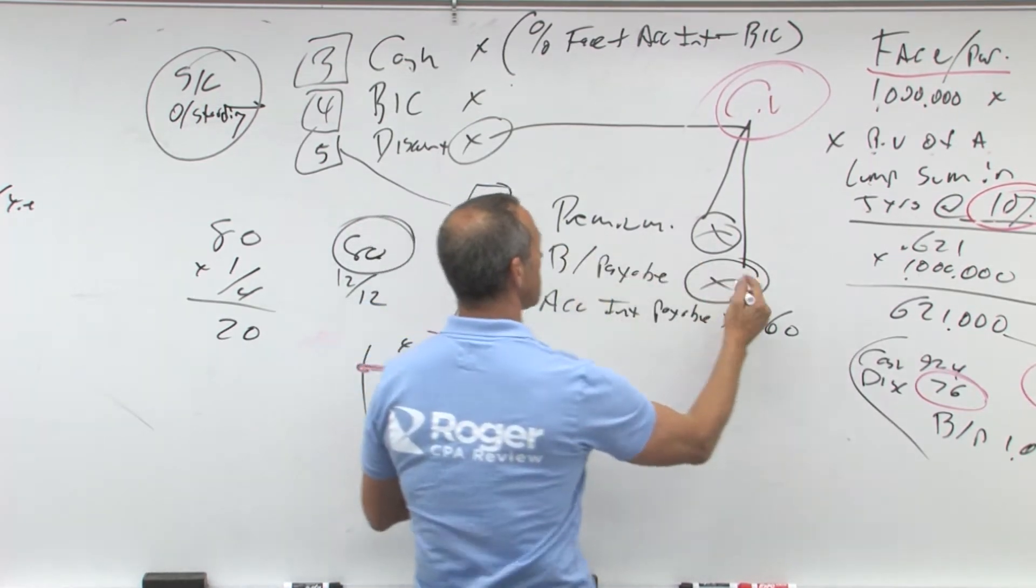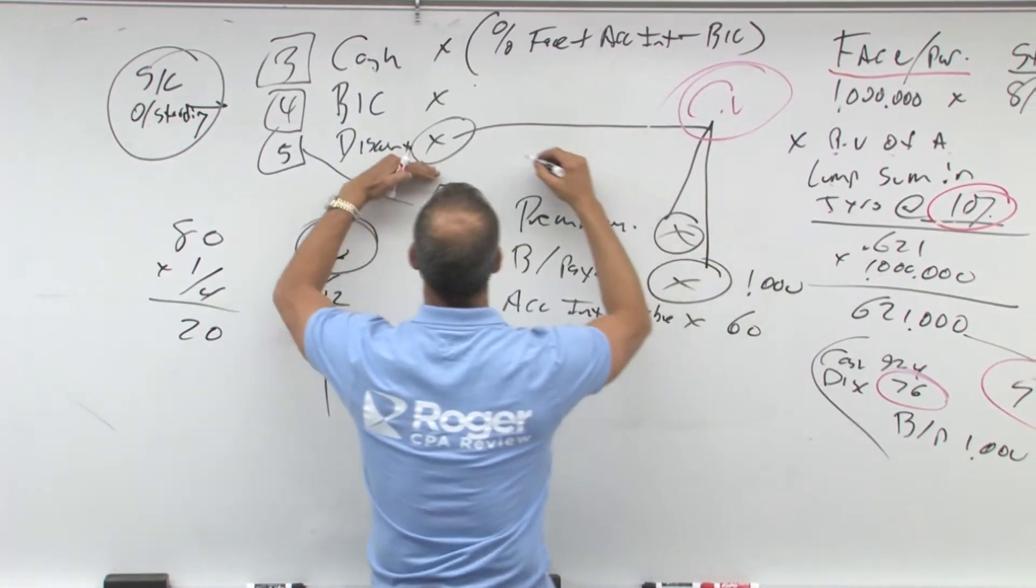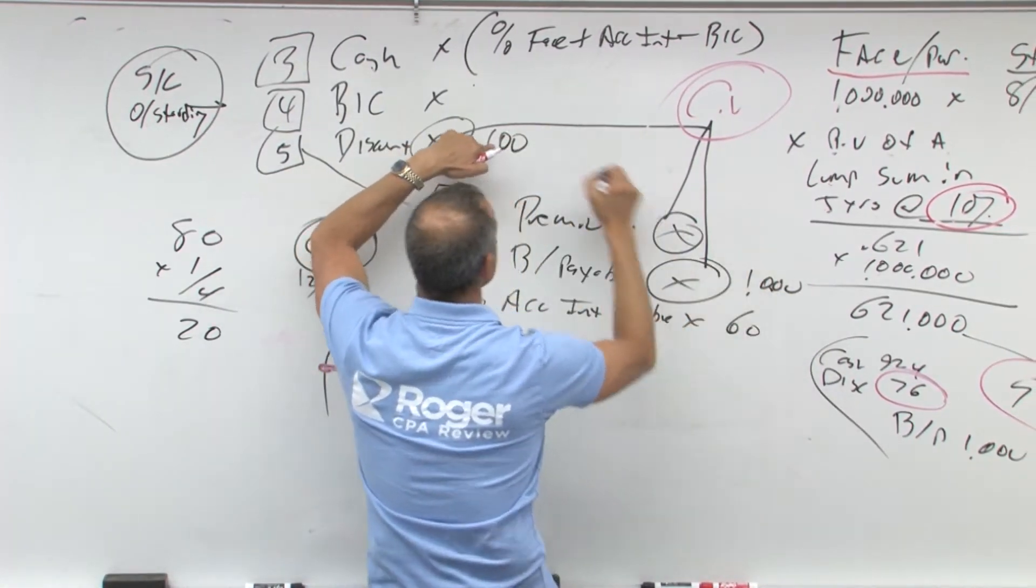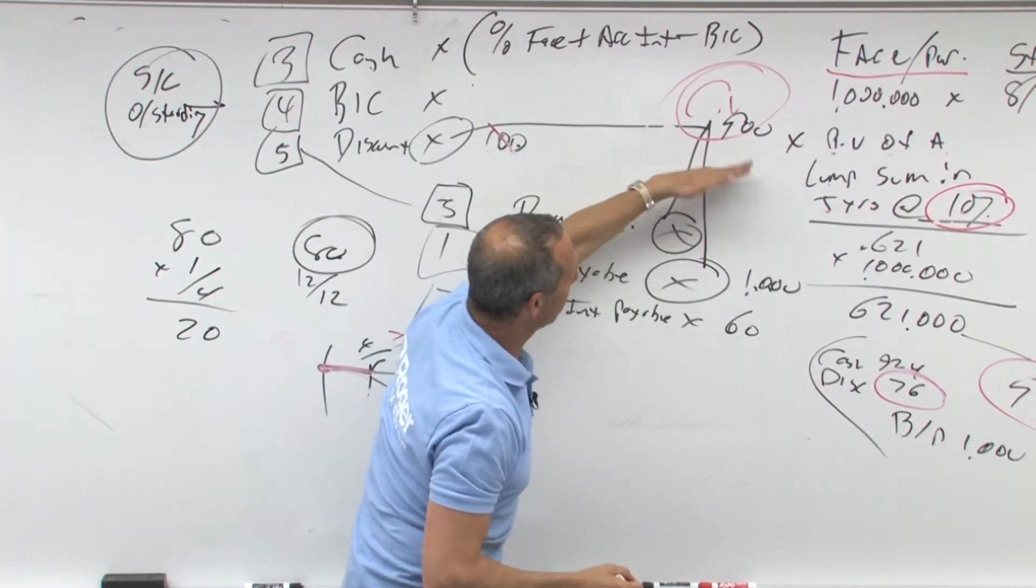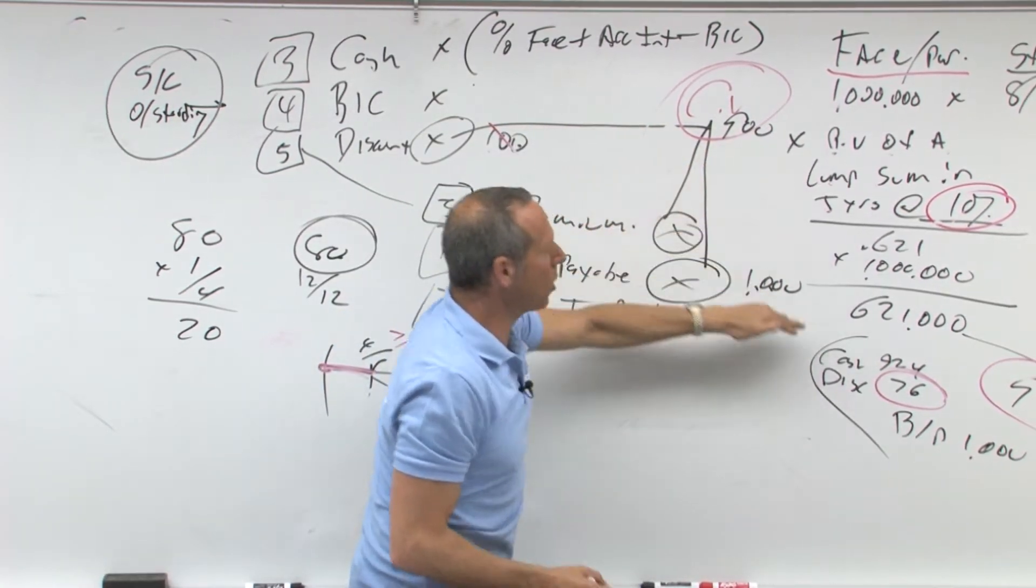Remember earlier, we had bonds payable was a million and I said the discount was a hundred, so this net of this is what, nine hundred. What do we do every year? This gets smaller, carrying value gets bigger, bigger, bigger, bigger, bigger, up to a million bucks.